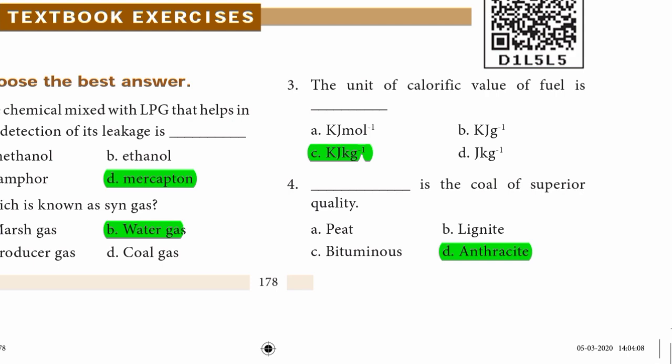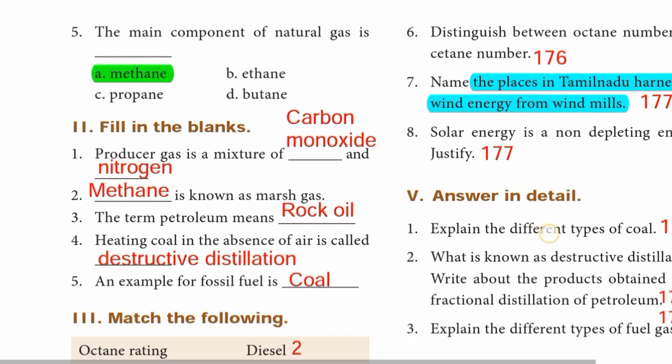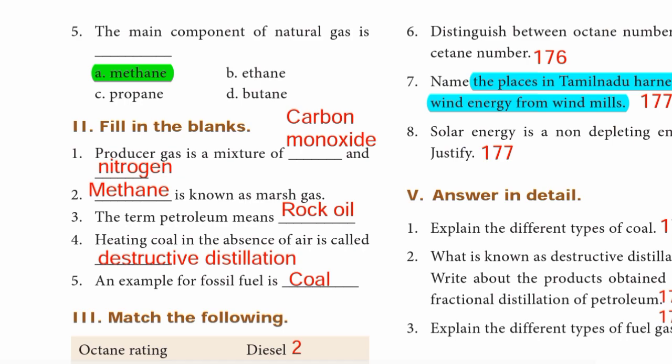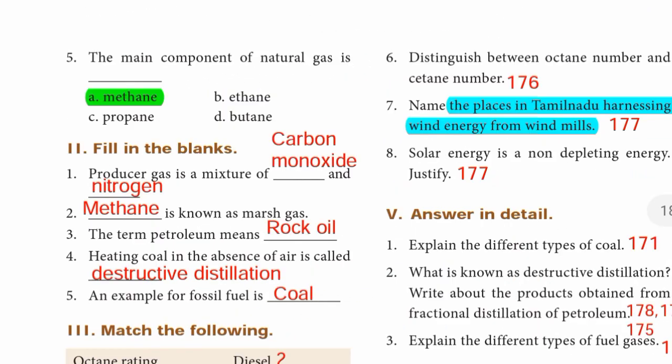Fourth one: Dash is the coal of superior quality — the answer is option D: anthracite. Page 179, fifth one: The main component of natural gas is option A: methane. Moving to Roman number two: Fill in the blanks.